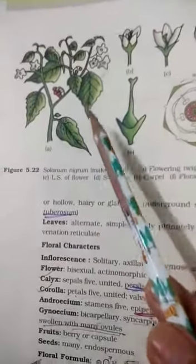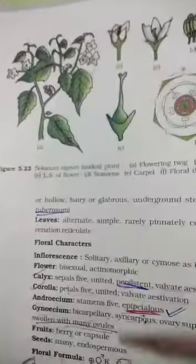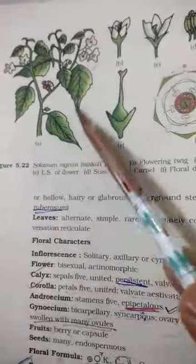Otherwise we can see the plant of petunia also, plant of tomato also. Tomato you may have seen, plant of brinjal also and dhatura also. All of these plants belong to this family.